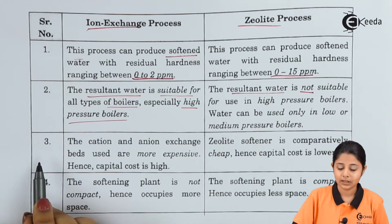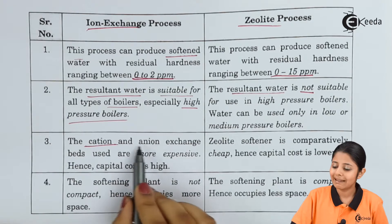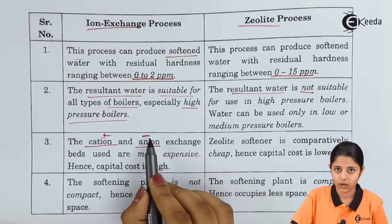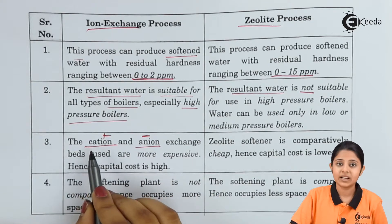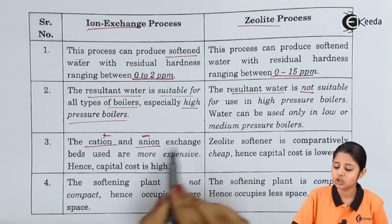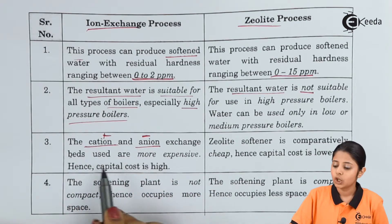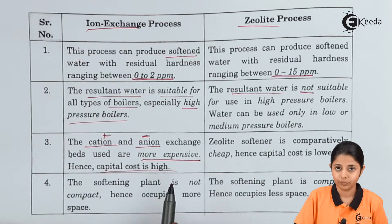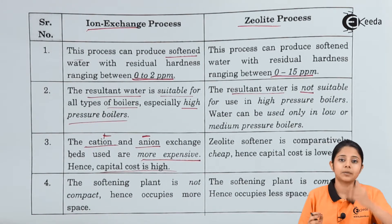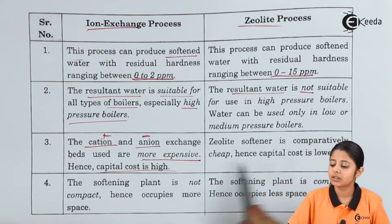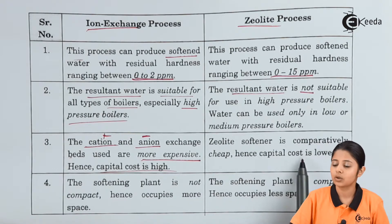The third comparison point: the cation and anion exchange beds used in the ion exchange process are more expensive, hence its capital cost is high — because the process uses a cationic bed, an anionic bed, and a gas chamber bed. For the zeolite process, the zeolite softener is comparatively cheap and hence its capital cost is lower.